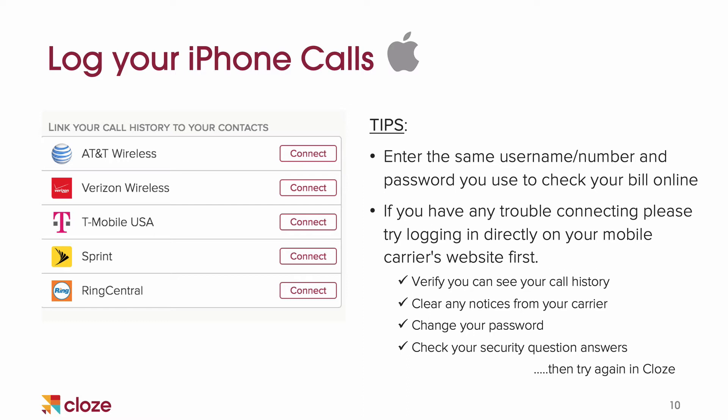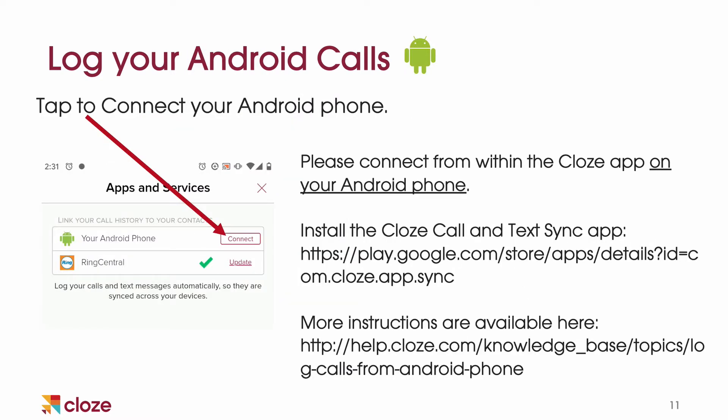If you have a family plan, make sure that you're the account manager. I highly recommend checking all that outside of Close and then coming back — you'll have success connecting. If you're on an Android device, you're going to see a different option to connect; you will do this on your Android phone. For iPhone users, you can connect your carrier either on the desktop or on your phone. But for Android users, you're going to connect directly on your device. You'll tap on that connect button, which brings you to the Play Store where you download a completely different app dedicated to call and text sync logging. Install that app, authorize Close, and it'll just run in the background logging all of your calls and texts for you.